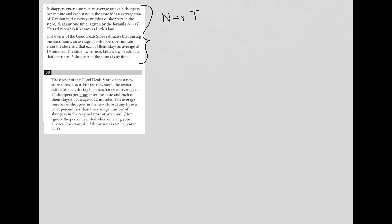Question 38 says the owner of the Good Deal store opens a new store across town. For the new store, the owner estimates that during business hours, an average of 90 shoppers per hour. So we have R equals 90 shoppers per hour. We need to convert that to per minute because that's what our unit for R is.